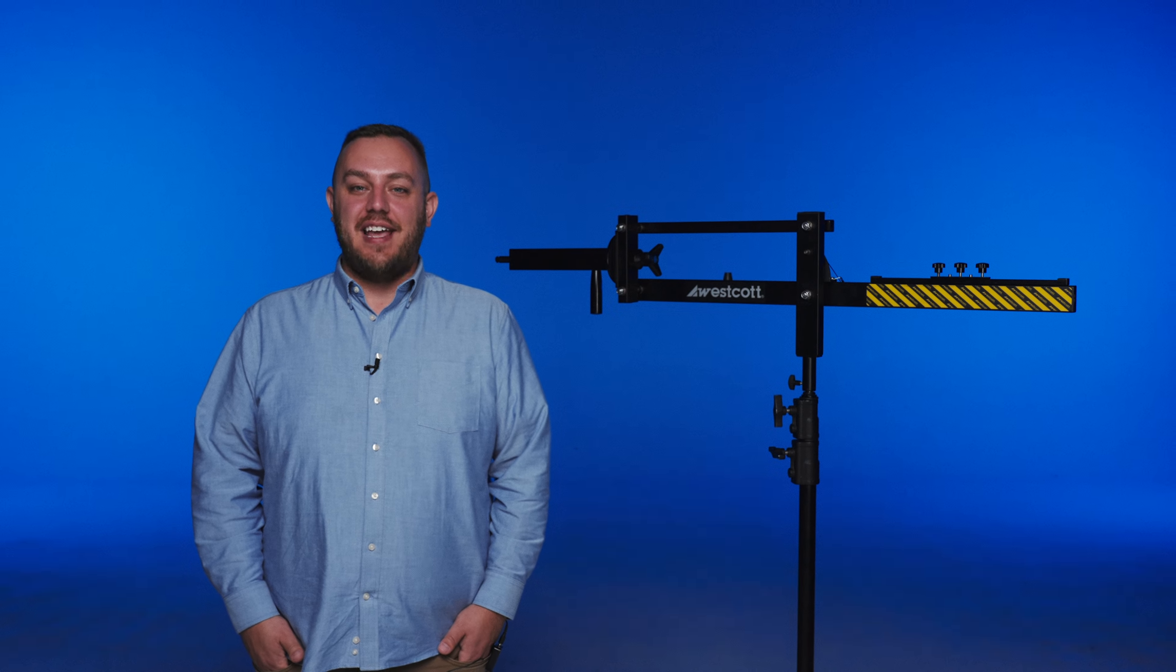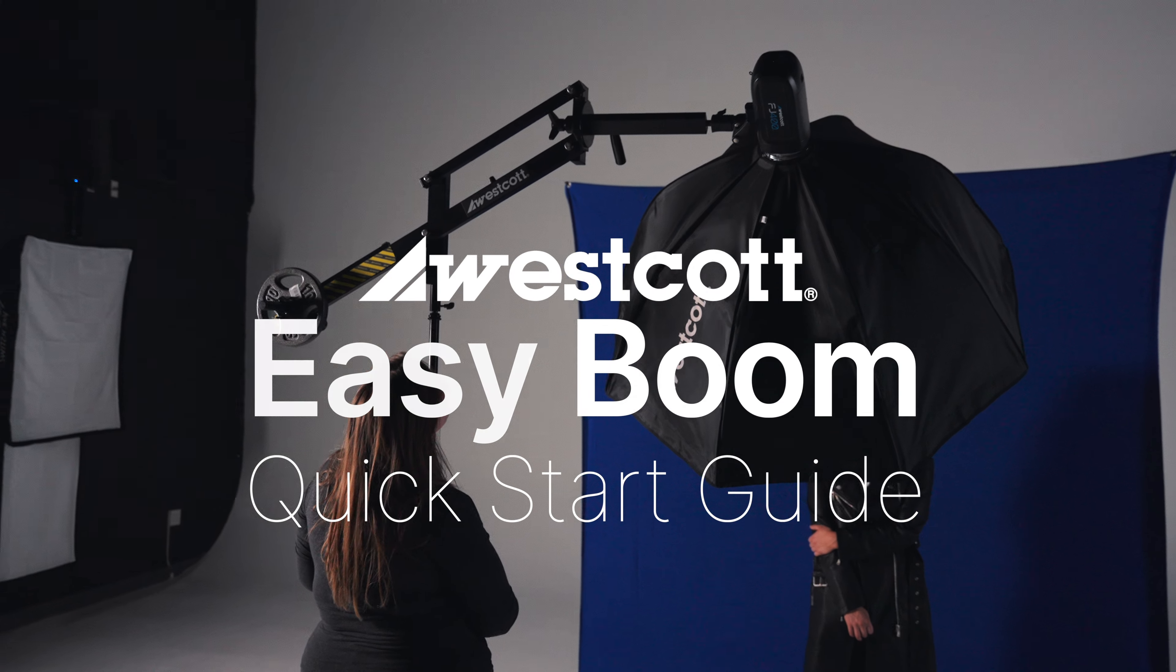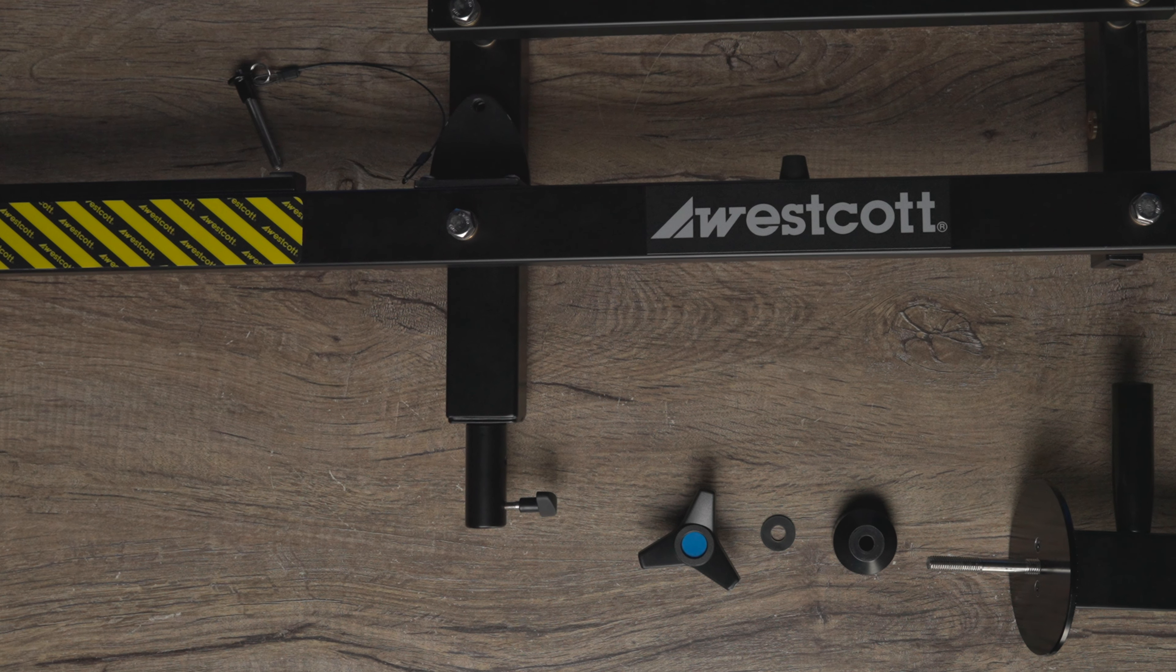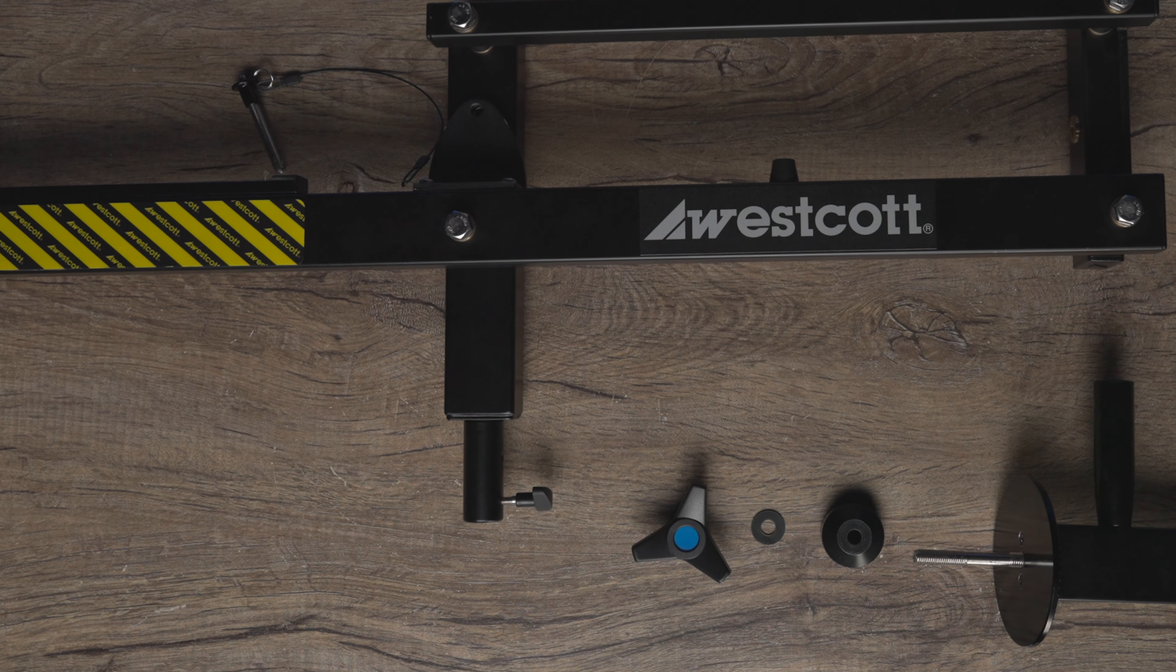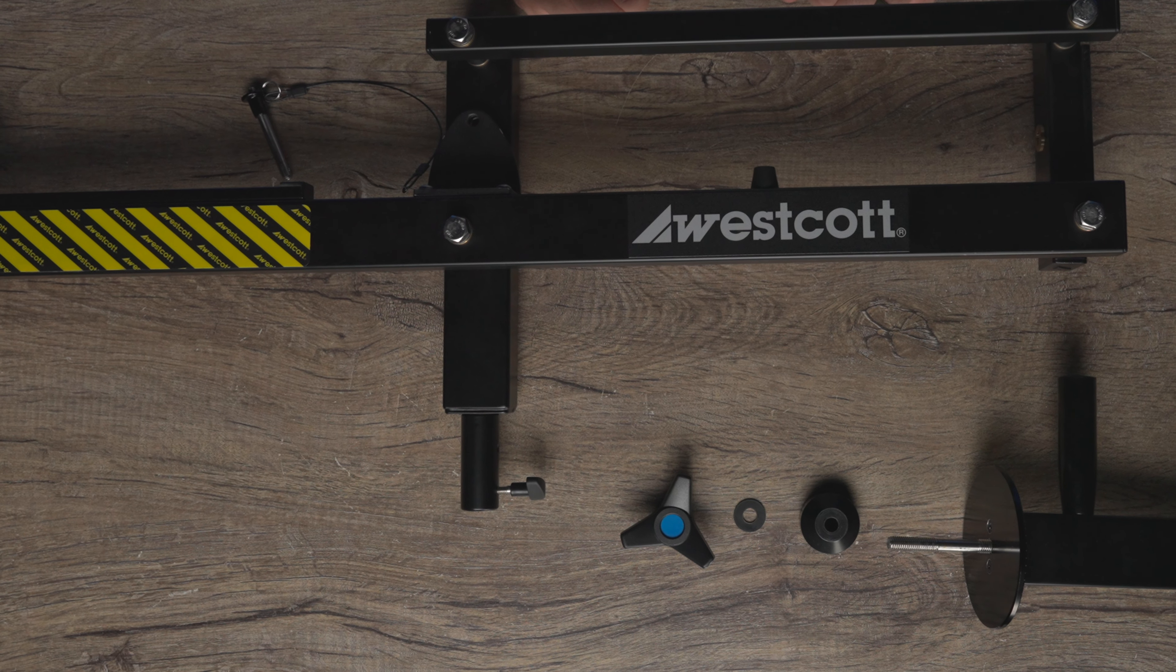Hey everyone, it's Jake from Westcott and today we're going to go over how to set up the Westcott EZBoom. Unpack all items from the box and place them on a flat surface. Do not mount the EZBoom onto a C-stand until assembly is finished.